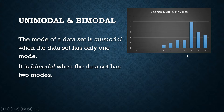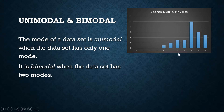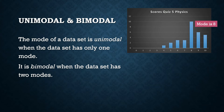How do we interpret this bar graph? How many students got a score of 10? There are five students who got a score of 10. How many students got a score of 8? There are 10 students who got a score of 8. How many got a score of 5? There are two. So the most frequently occurring observation is 8 — the mode is 8. This is an example of a unimodal data set.